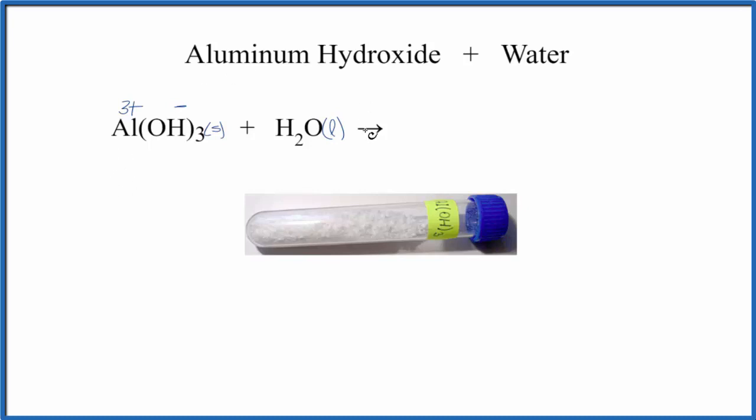So we drop the solid into the liquid, and this breaks apart into its ions: Al3+, plus OH-, that hydroxide ion. Since we have this subscript 3 here, that means we have three hydroxide ions, so we put a 3 in front of here.